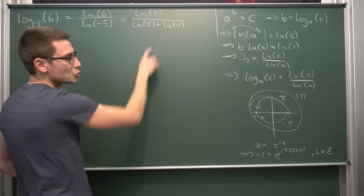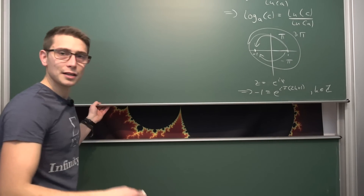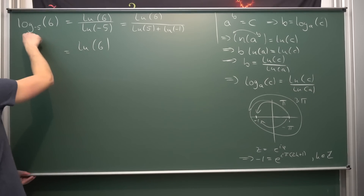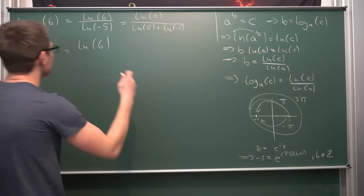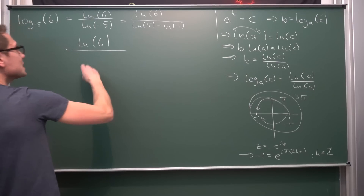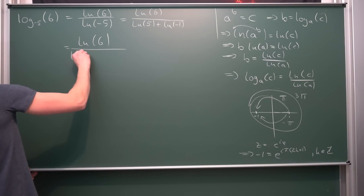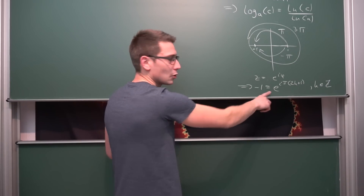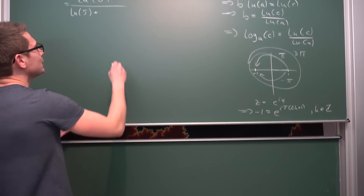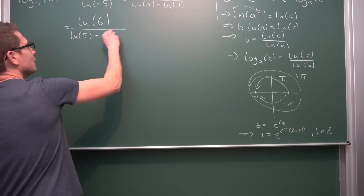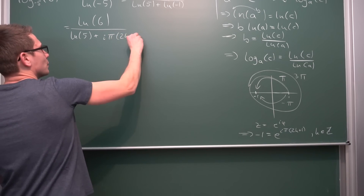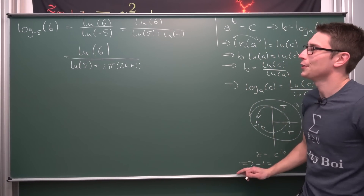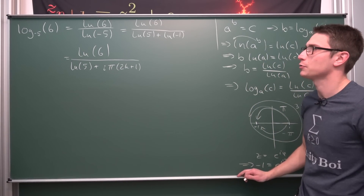Applying the natural log to e to the i·π·(2k+1), the natural log and e cancel out, giving us overall that the natural log base negative 5 of 6 equals ln(6) divided by ln(5) plus i·π·(2k+1). And this right here is our log base negative 5 of 6.